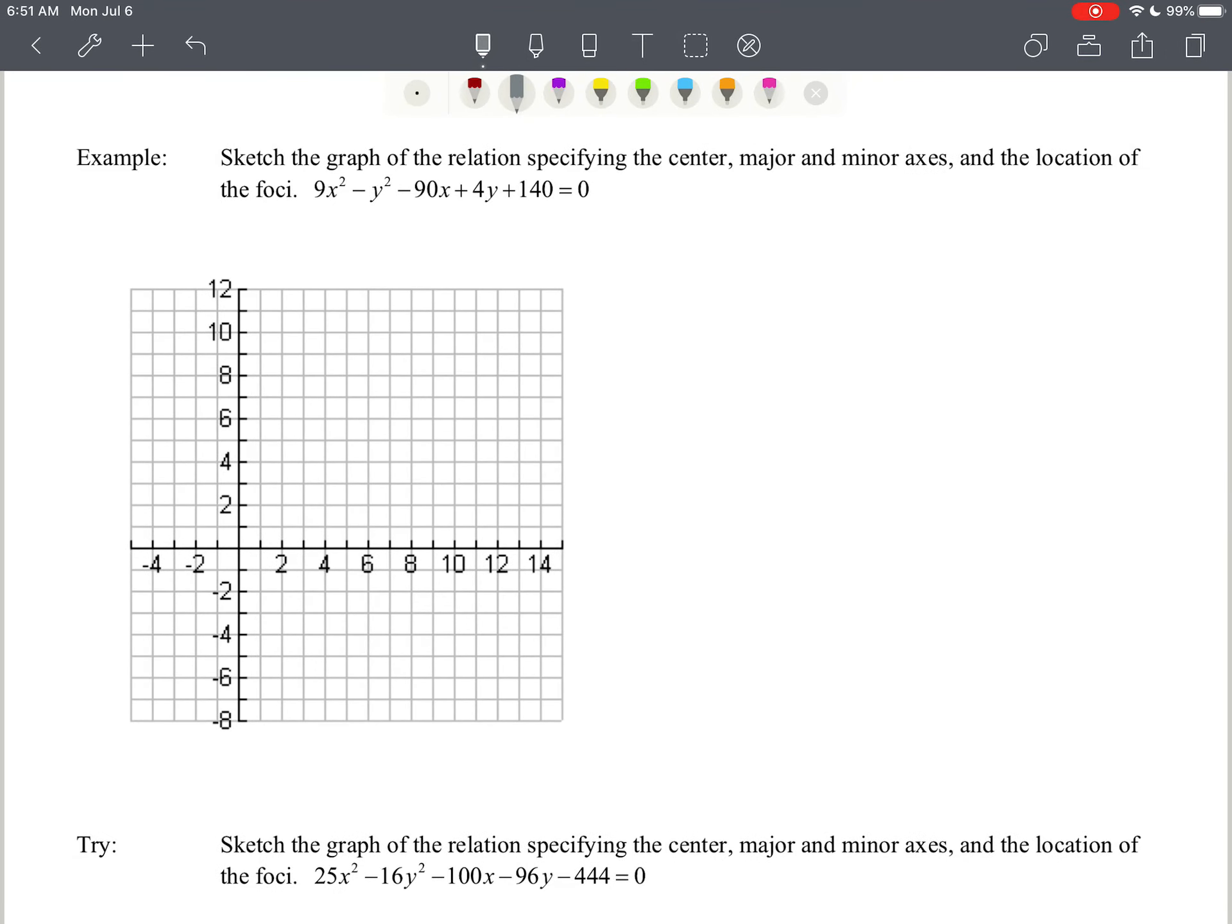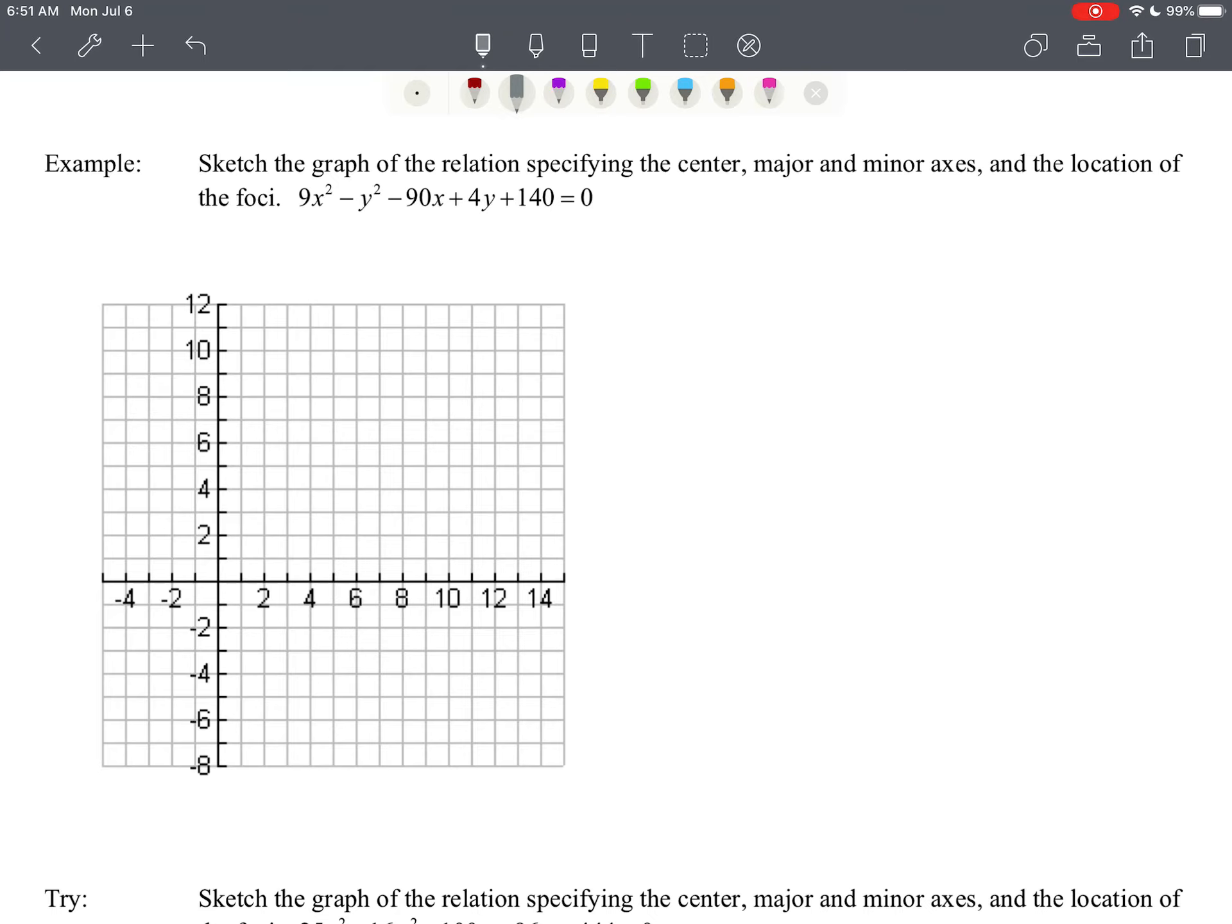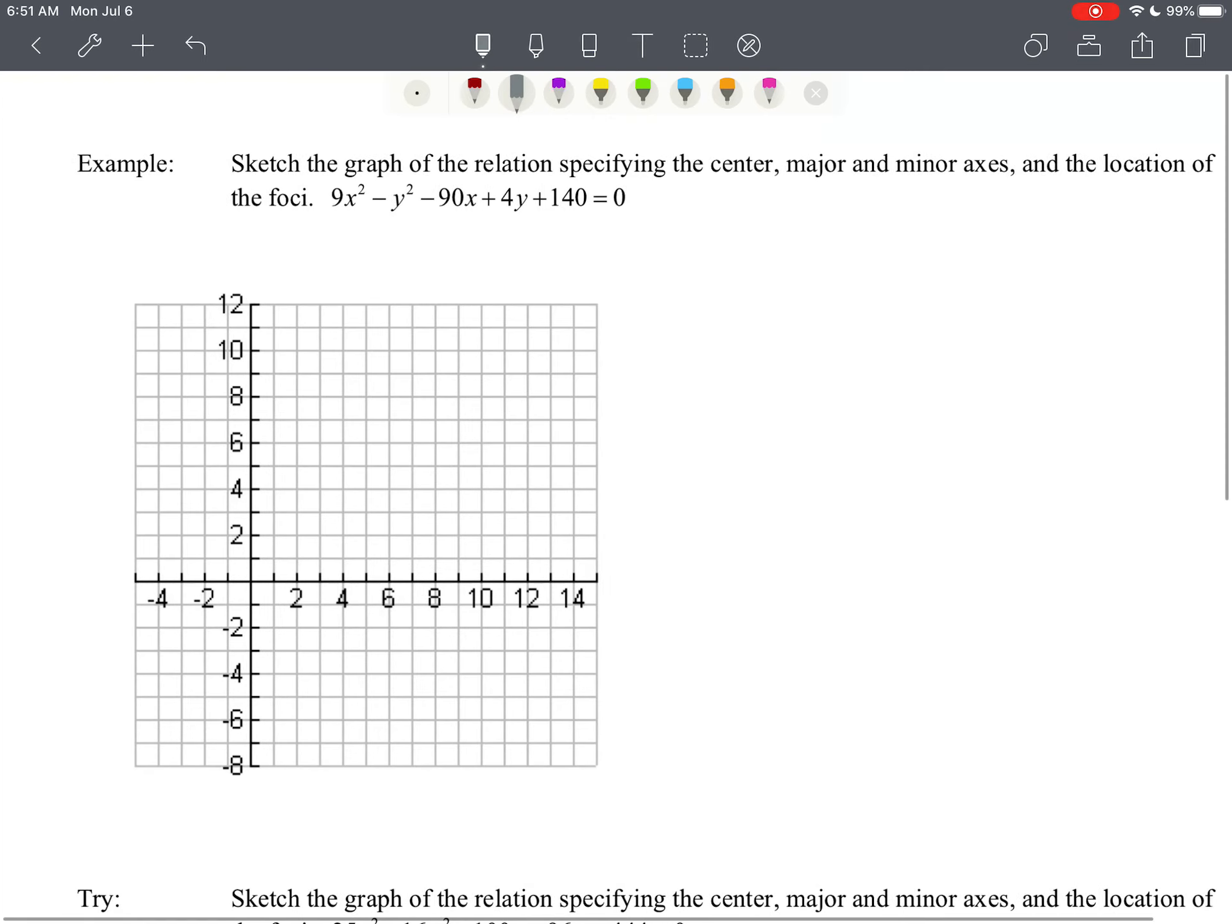So we're going to do another example here: 9x squared minus y squared minus 90x plus 4y plus 140. We know this is a hyperbola because we have quadratic terms and they are opposite signs.